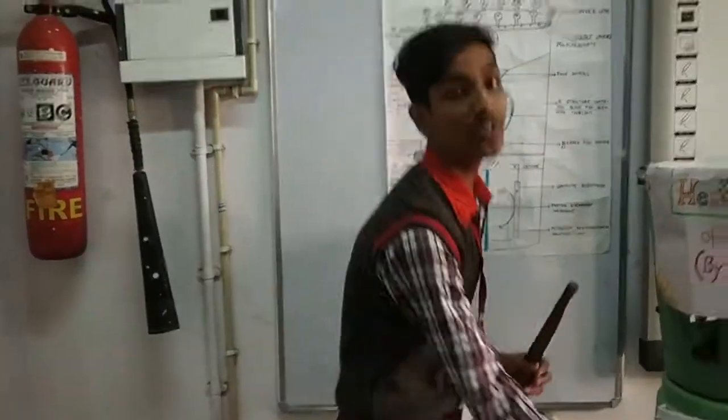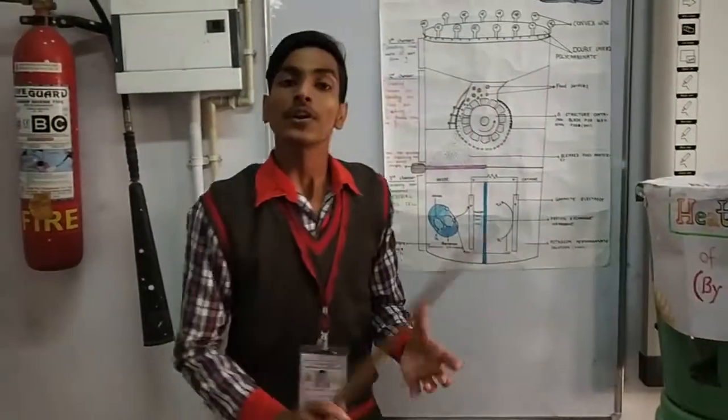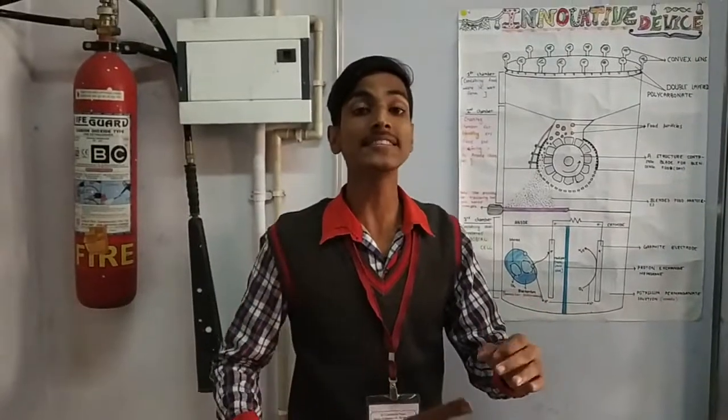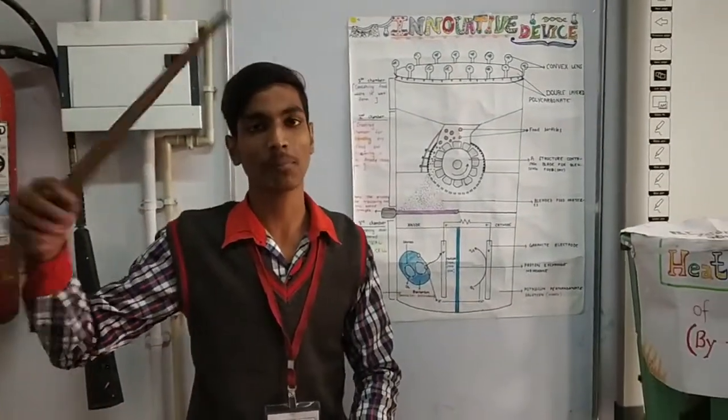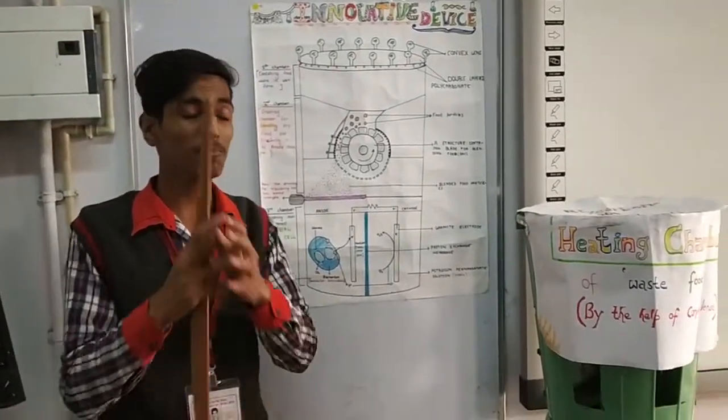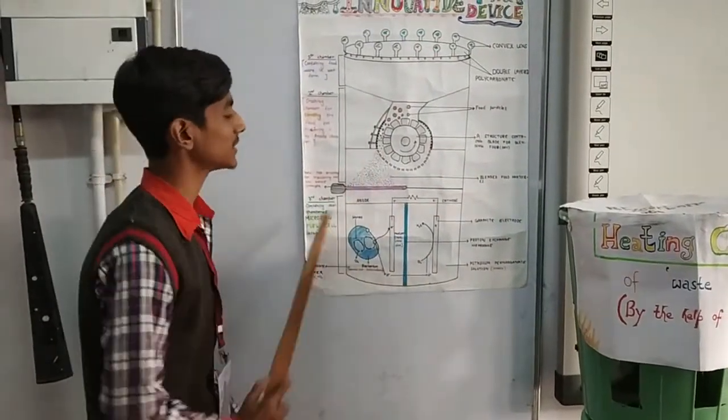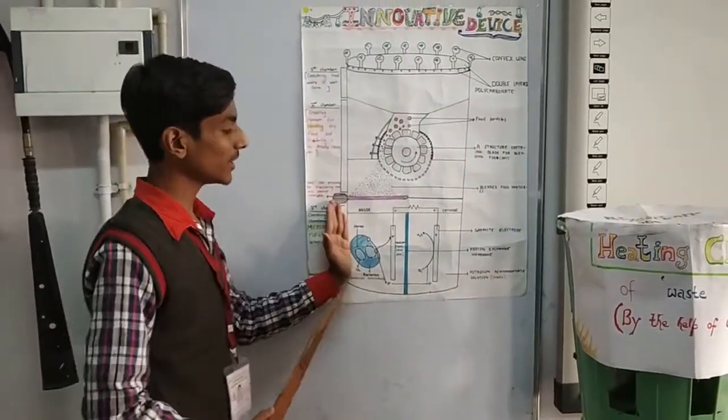After this, the electricity production we noted was 2.7 Watt per meter cube for 10 liters of waste. This was a 7 times increase in our electricity production, which was a very good result. This was our whole structure with three chambers.